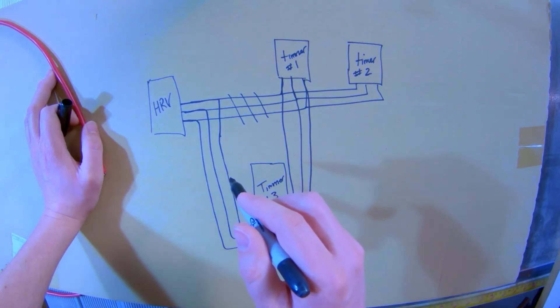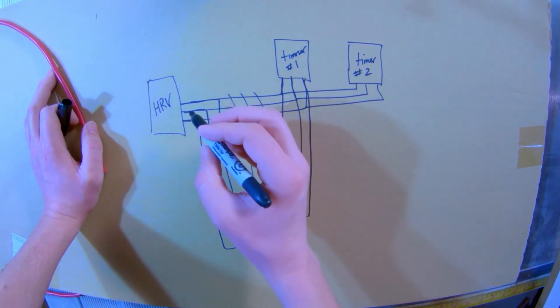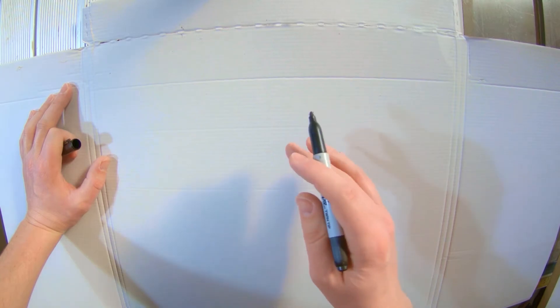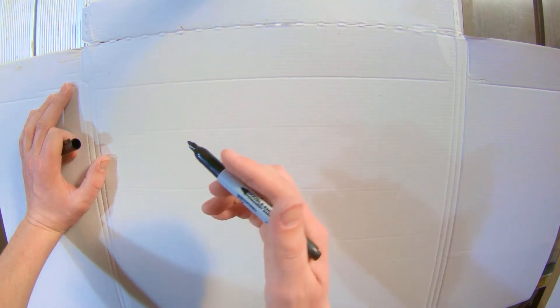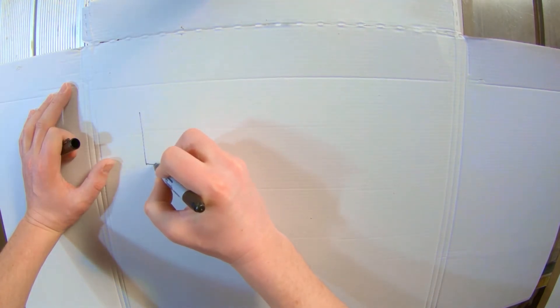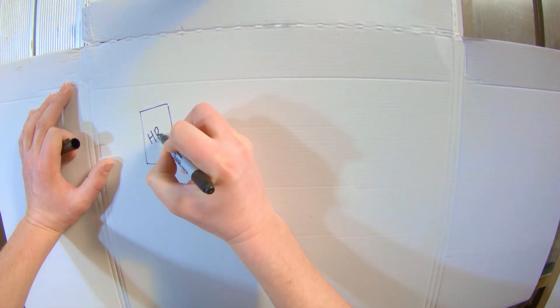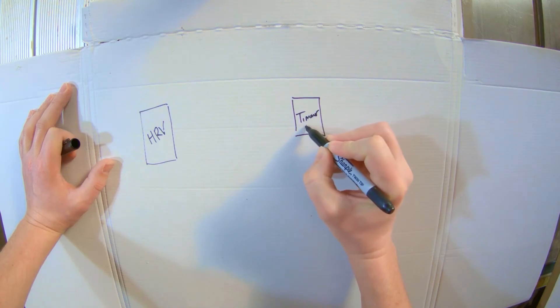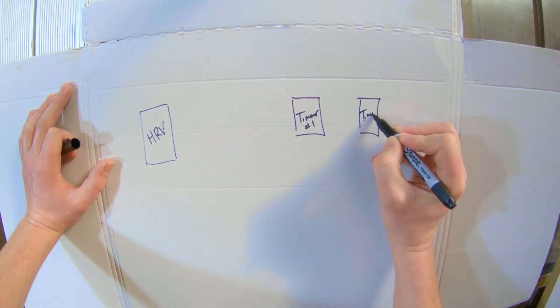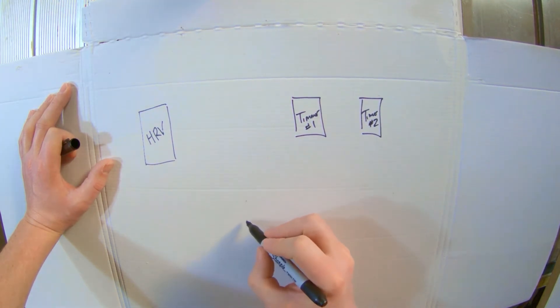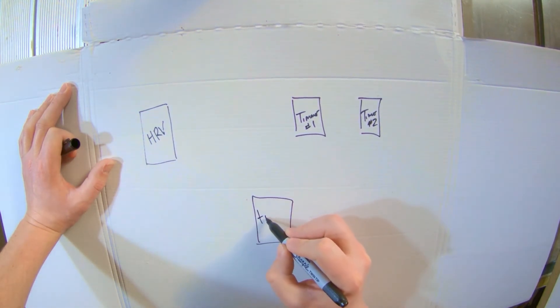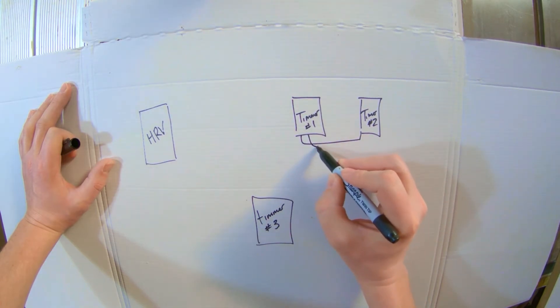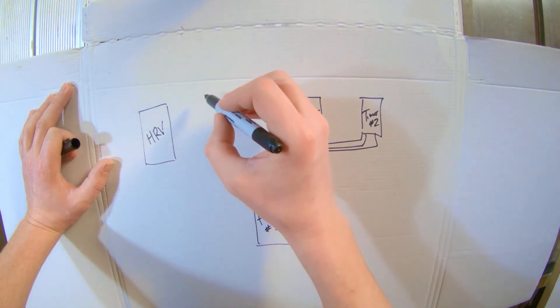Now, if this isn't an option for you, because this wire run is too short, what you can do, so if you aren't able to repurpose that cable that was running from your timer one all the way back to your HRV, there is another way you can do it. So here you still get your HRV. Here you got your timer one. And timer two. And here you got your new timer three. So these would be connected just like they would normally be, aren't changing that.